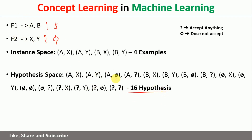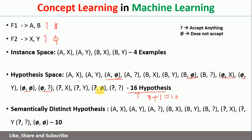But if you look at this hypothesis space, it contains null at many places, while the instance space does not have any null. So rather than writing null in multiple hypotheses, we consider only one representation and remove the rest. Counting those: 1, 2, 3, 4, 5, 6, 7 — there are 7. We remove 7 from 16, leaving 9, and then add 1 representation for null, giving us 10 semantically distinct hypotheses. I have written all 9 combinations plus 1 null representation — so totally 10. These are 3 possibilities times 3 possibilities giving 9, plus 1 null representation equals 10. This is how you calculate instance space, hypothesis space, and syntactically distinct hypothesis space.